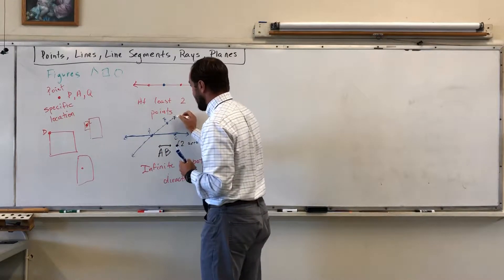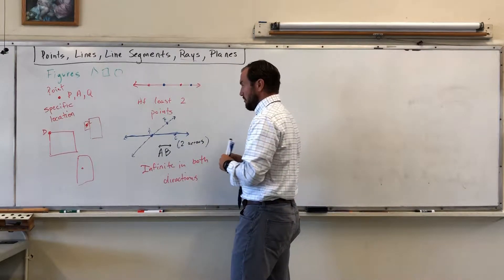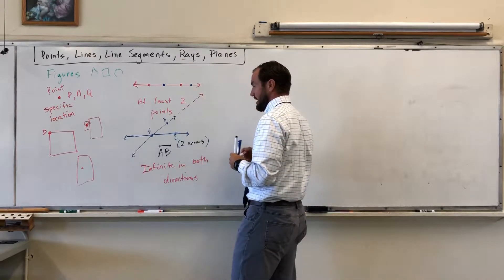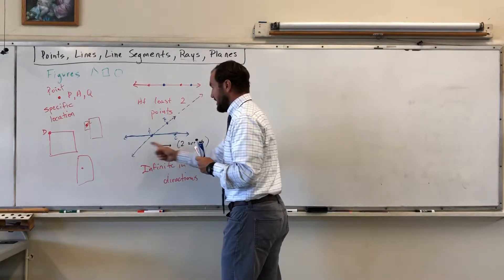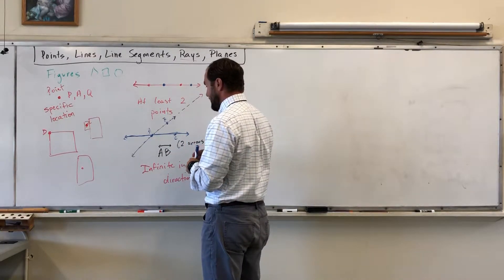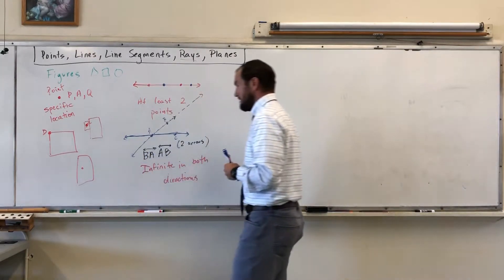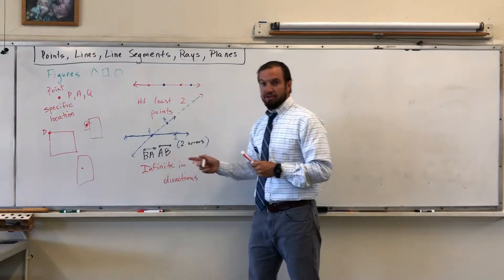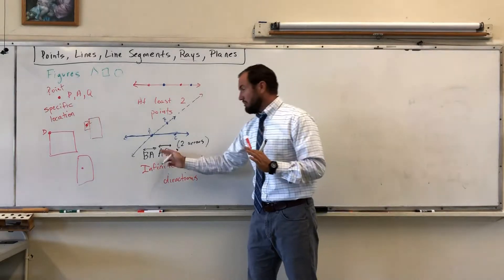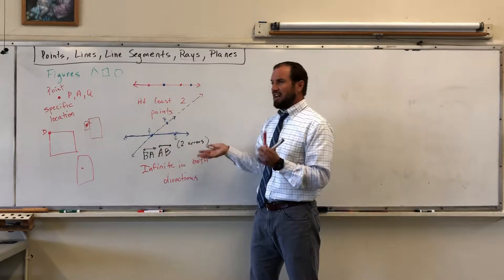Those two arrows say the line is infinite — it goes on forever in both directions, never ending. So I'm talking about line AB. Does the order of the letters matter? Can I say BA instead? No — that's the same. As long as you're using the correct letters, it doesn't matter.